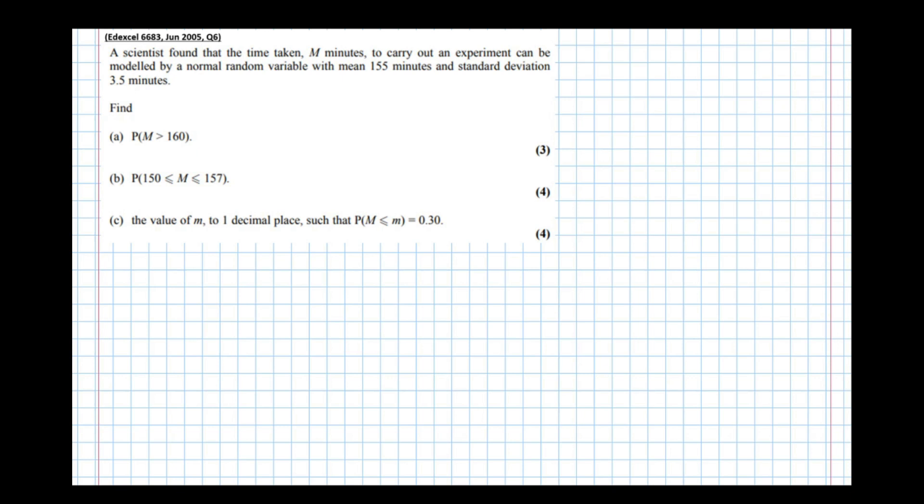In this video we're going to do a quick introduction to the normal distribution and how to calculate normal probabilities in the context of an exam question. A scientist found that the time taken M minutes to carry out an experiment can be modeled by a normal random variable with mean 155 and standard deviation 3.5.